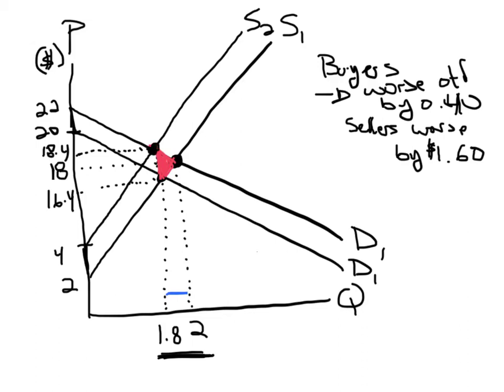We call that a deadweight loss because it's surplus that in the free market would have been achieved, and now we don't have that. And it's pretty easy to actually get the actual number in dollar terms because all we need to do is apply a little geometry here.